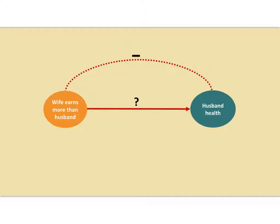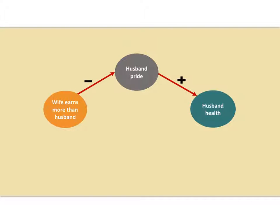The big question is: does this correlation mean there's a causal effect — that a wife earning more than her husband causes his health to be worse? One initial clue to causation is a plausible mechanism, and there is one here. Perhaps if a wife earns more than her husband, it hurts his pride. So there's a causal relationship from the wife earning more that trickles through into his pride. And perhaps husband's pride, like so many psychological variables, can affect his health — lower husband pride, lower husband health.